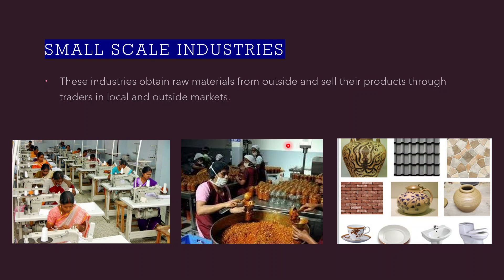Small-scale industries obtain raw materials from outside and sell their products to traders in local and outside markets. Power-driven machines are used in these industries and employment opportunities are provided to a handful of people. Products such as ceramic products, toys, leather items, food items, utensils, and furniture are manufactured in small-scale industries.